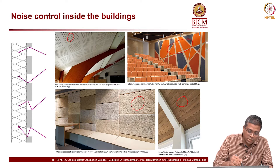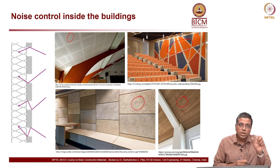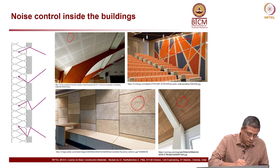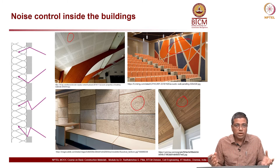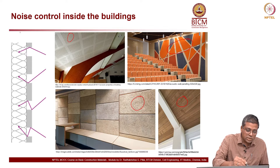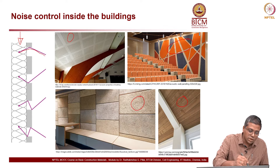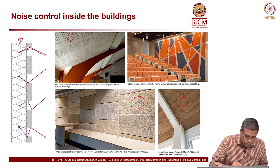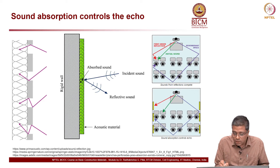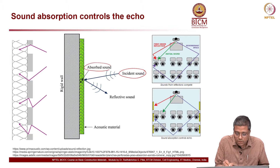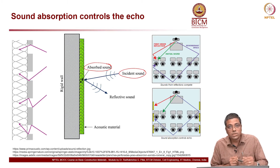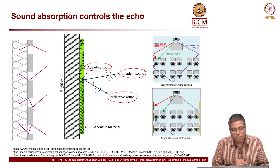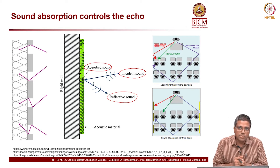The working principle of sound absorbing materials is that the sound waves penetrate into the material and get absorbed so you do not hear the echo. On the left side you can see the acoustic absorbent material — the sound waves go in and do not come out. That is the whole idea. If 100% of the sound is absorbed then you cannot hear anything — that is the other extreme.